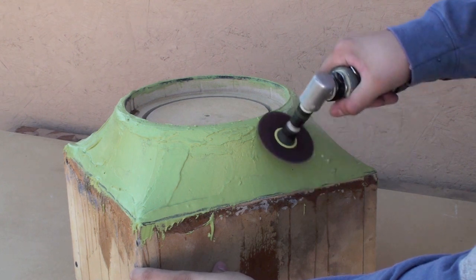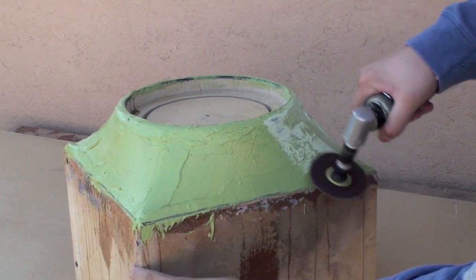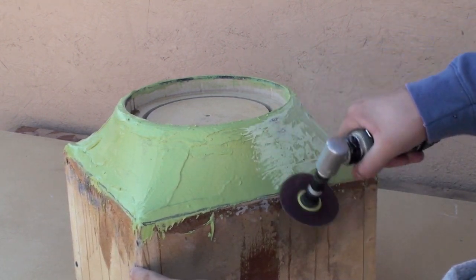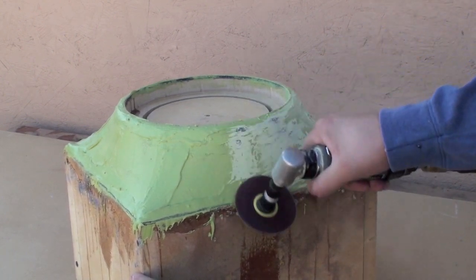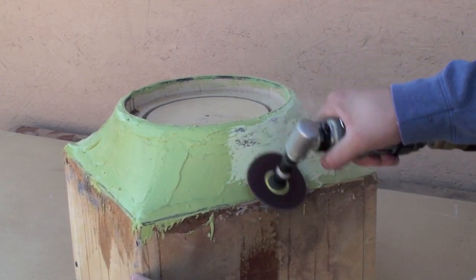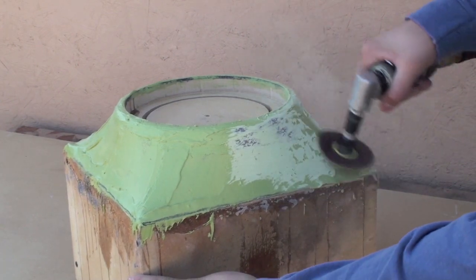Now take an angle die grinder and begin sanding the body filler. I'm using 80 grit for this step. Hand sanding is also an option, but your fingertips will be stressed in this step.